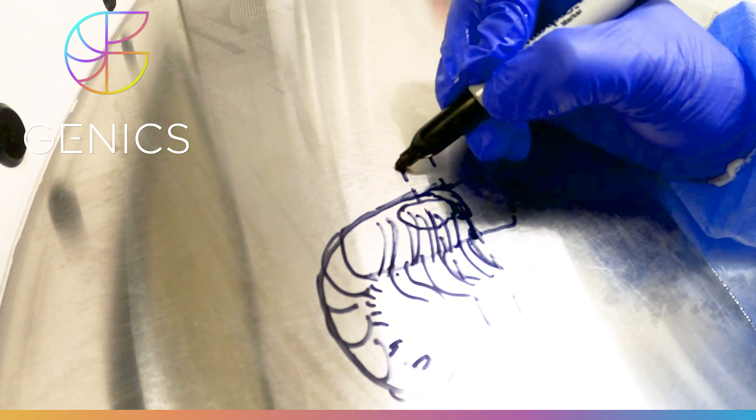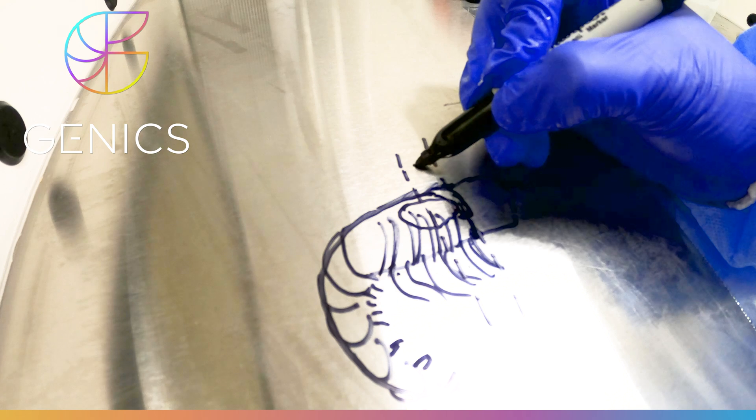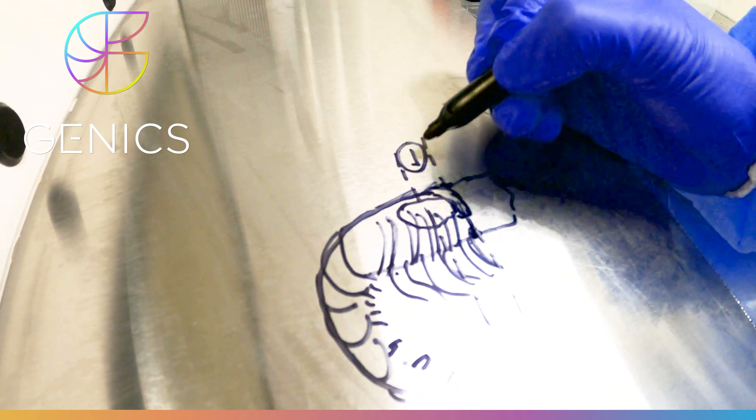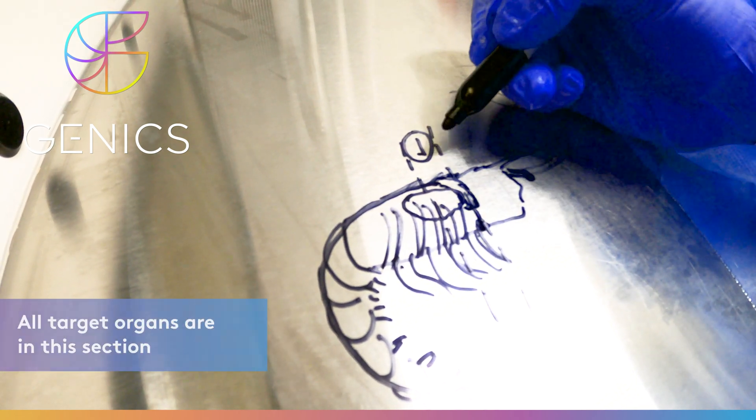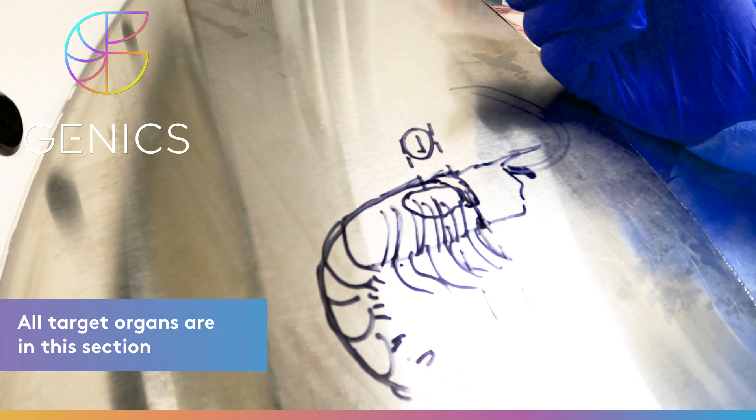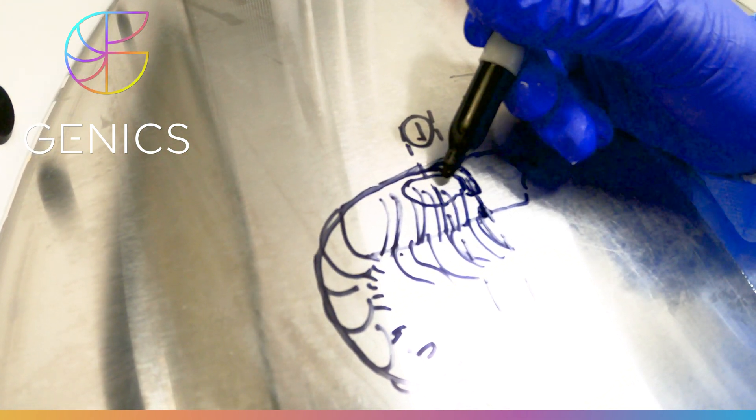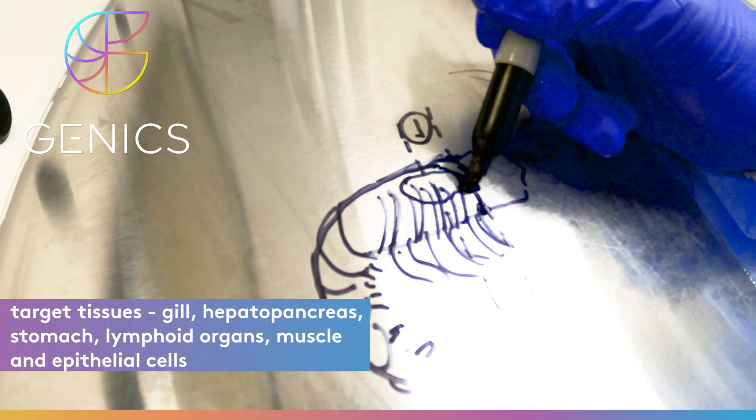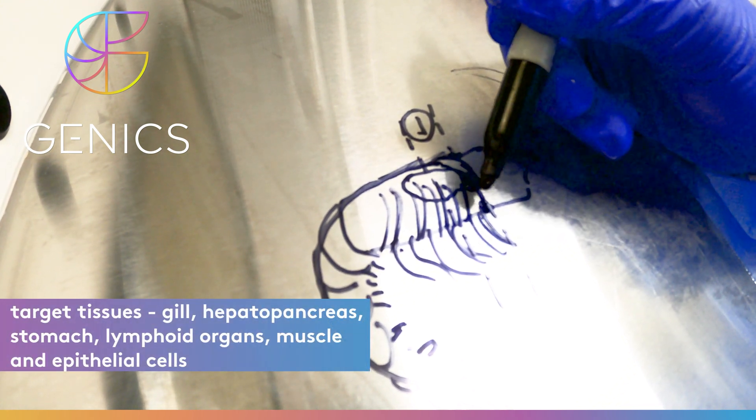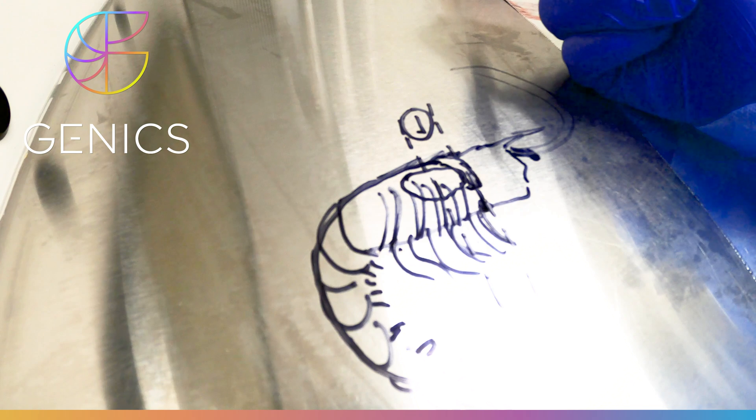So what we end up with here, this is the piece that we want to sample for the sensitive pathogen detection on a tool like shrimp multipath, and we end up with gill, hepatopancreas, stomach, lymphoid organs, muscle, and epithelial cells in that particular sample.